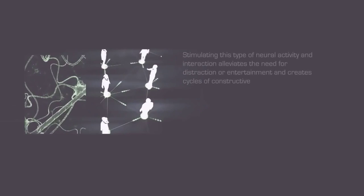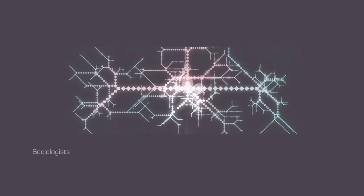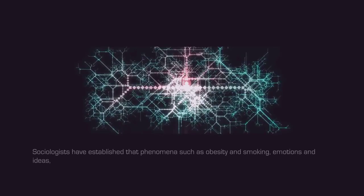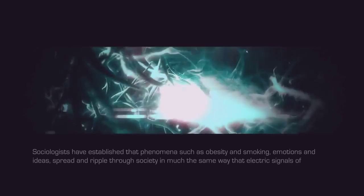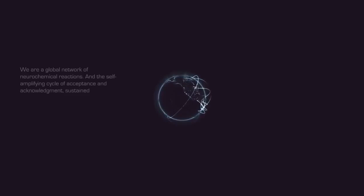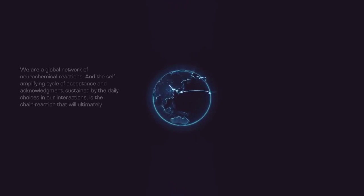Sociologists have established that phenomena such as obesity and smoking, emotions and ideas spread and ripple through society in much the same way that electric signals of neurons are transferred when their activity is synchronized. We are a global network of neurochemical reactions. And the self-amplifying cycle of acceptance and acknowledgement sustained by the daily choices in our interactions is the chain reaction that will ultimately define our collective ability to overcome imagined differences and look at life in the grand scheme of things.